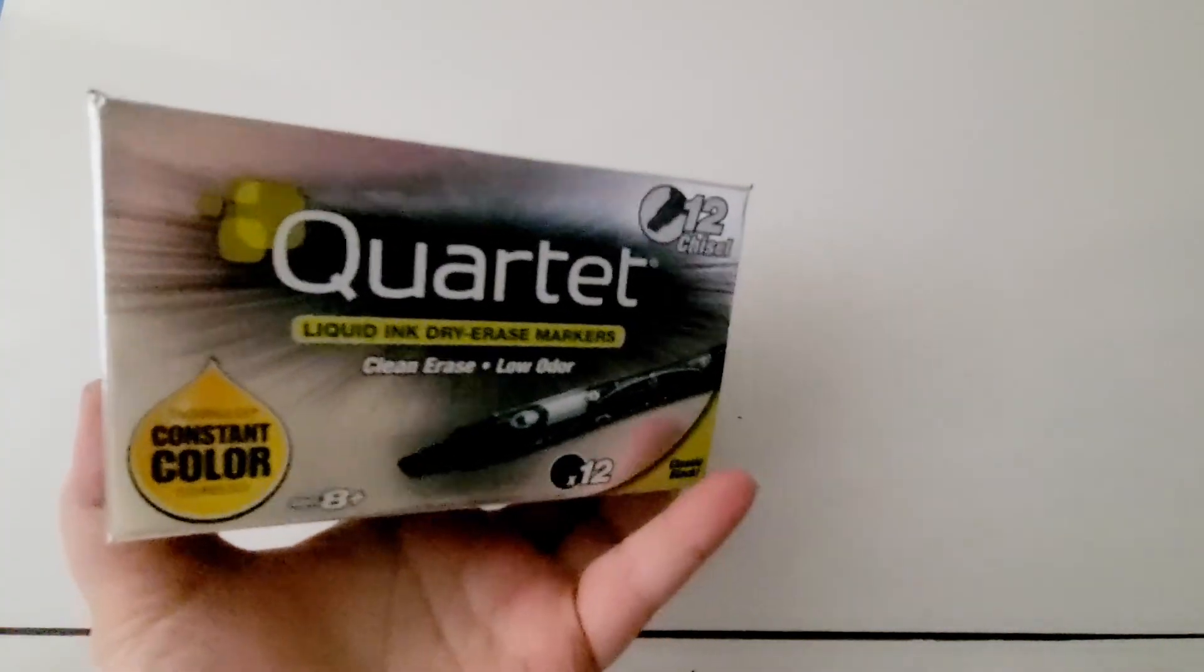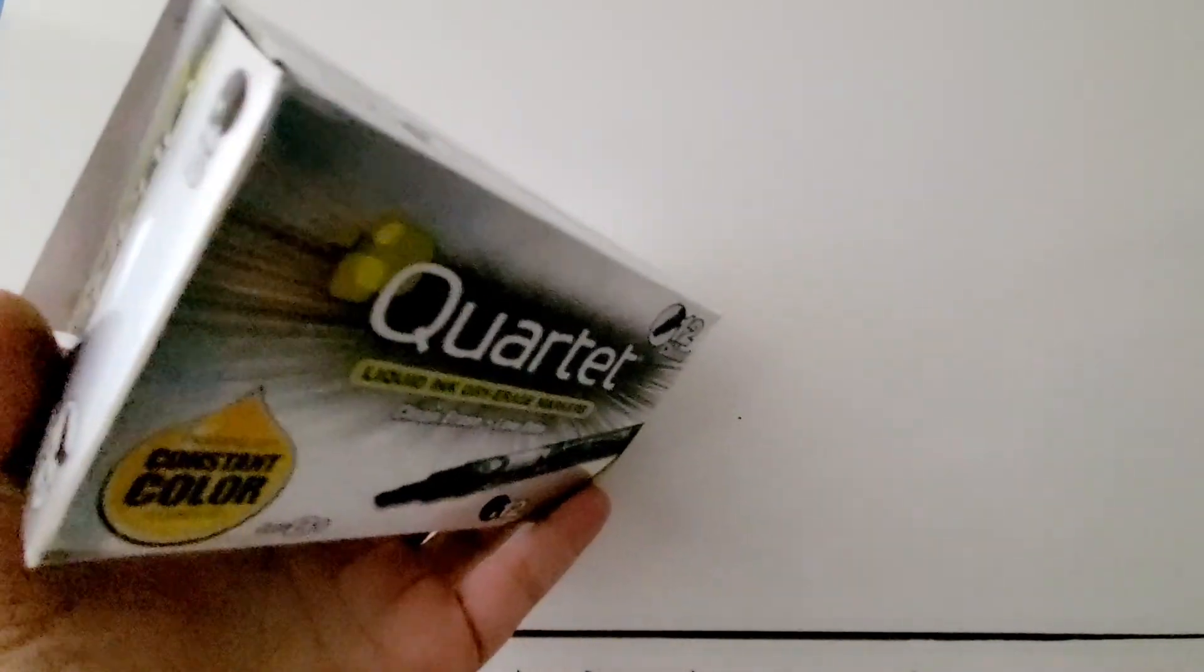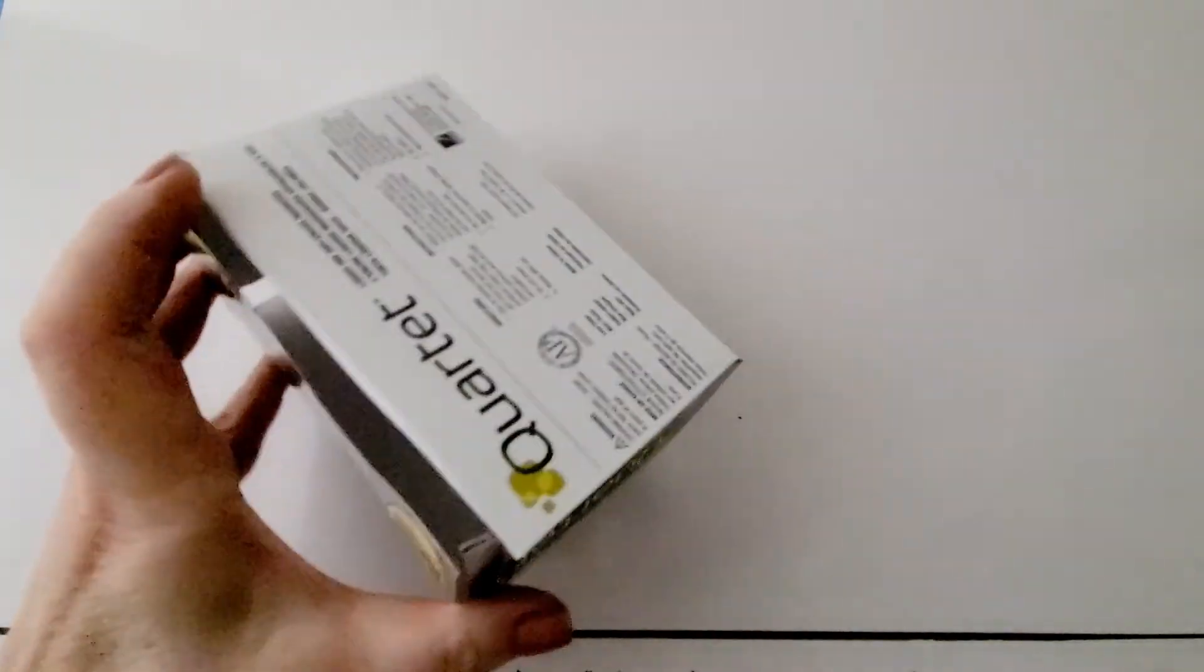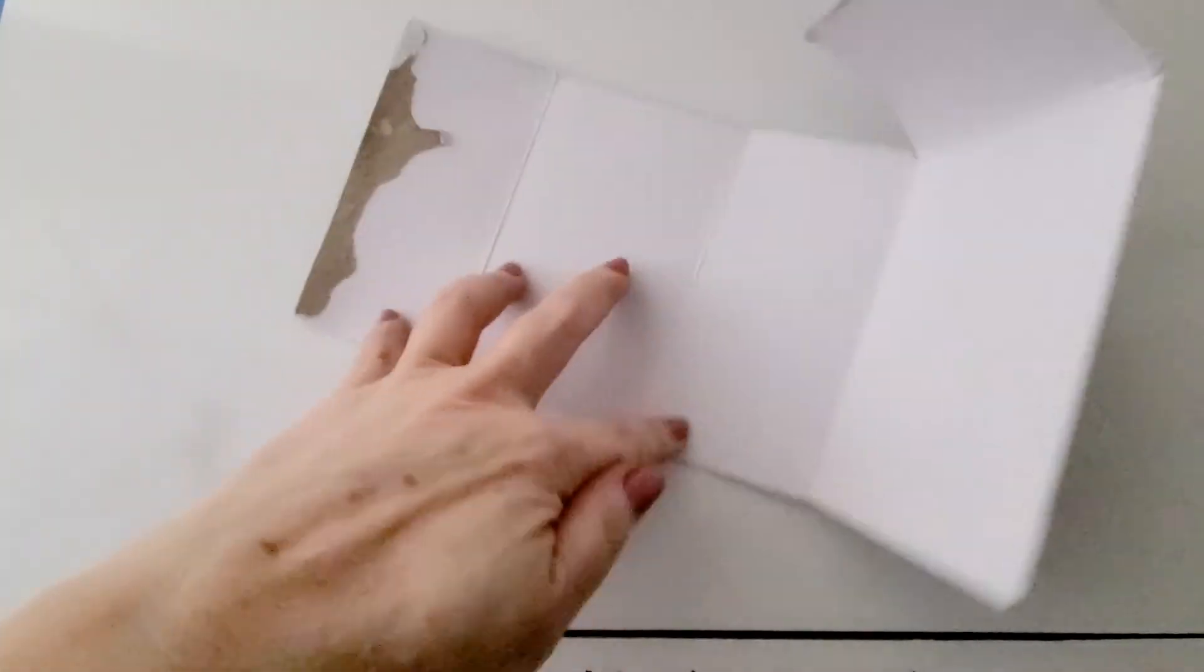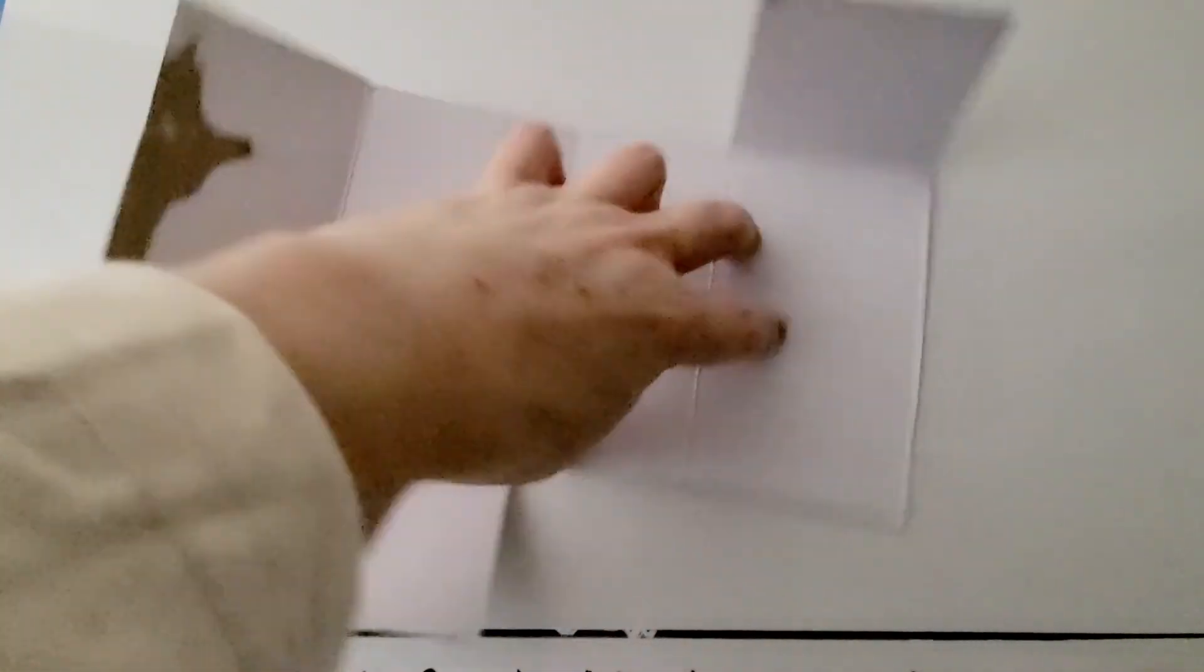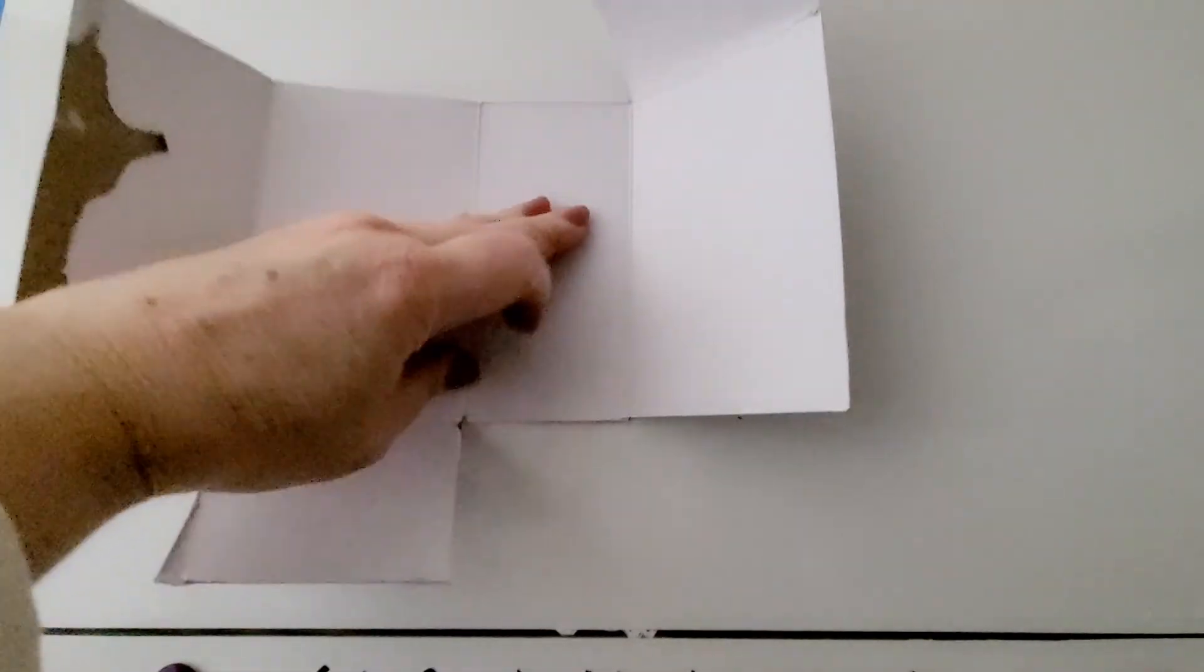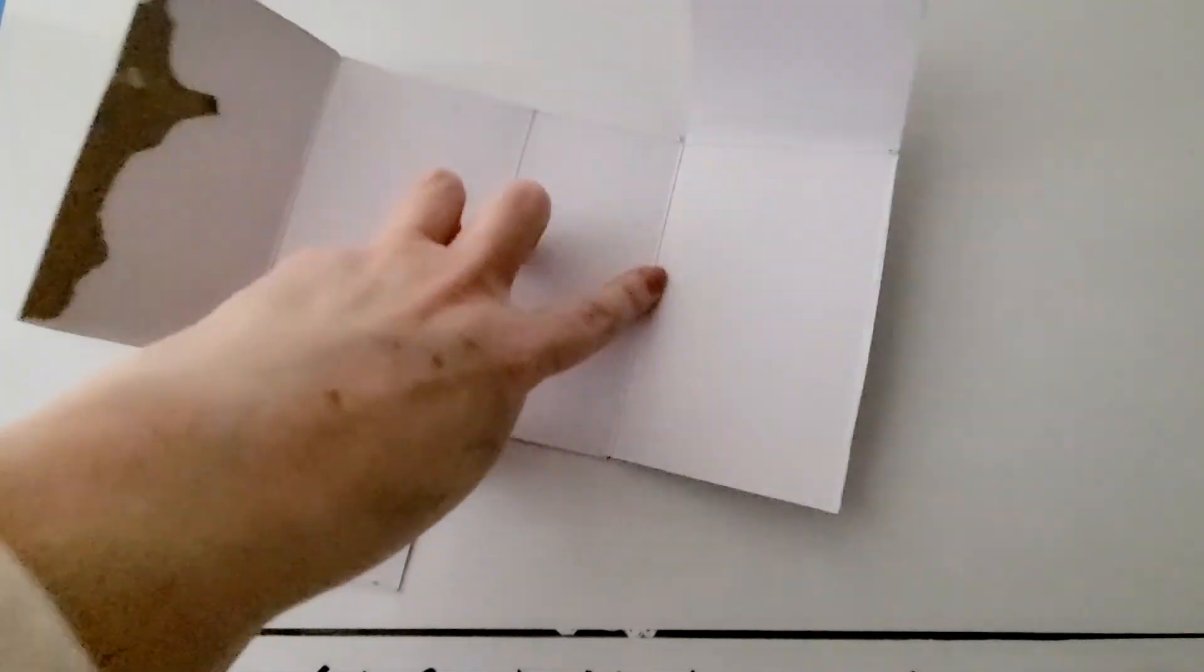This is the box that my dry erase markers come in. If I unfold it, it's a rectangular prism. We can see that it's got this for the side and this part for the side, and then it's got four rectangles coming across.